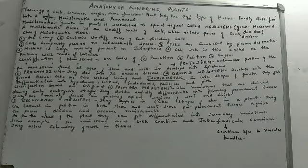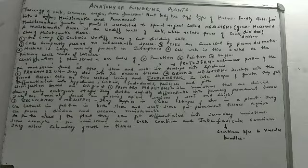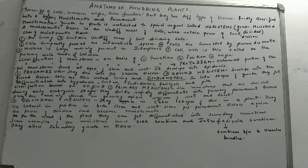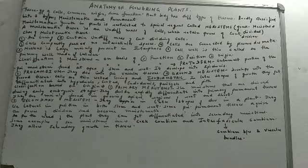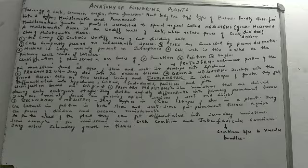What is a meristematic tissue? It is an undifferentiated mass of cells. The cells in meristematic tissue are undifferentiated — they have not yet acquired a specific shape or function. Meristematic tissue is an undifferentiated mass of cells which retains its power of continuous division. Those cells which can continuously divide and are not yet differentiated collectively form a meristematic tissue.